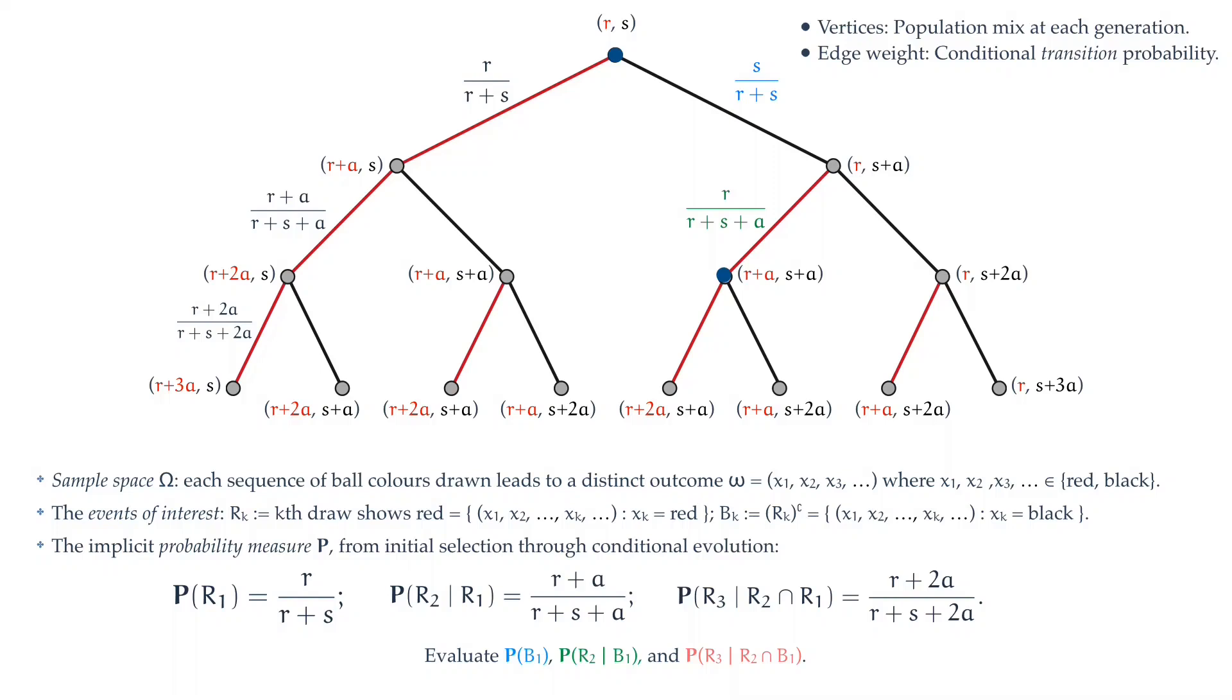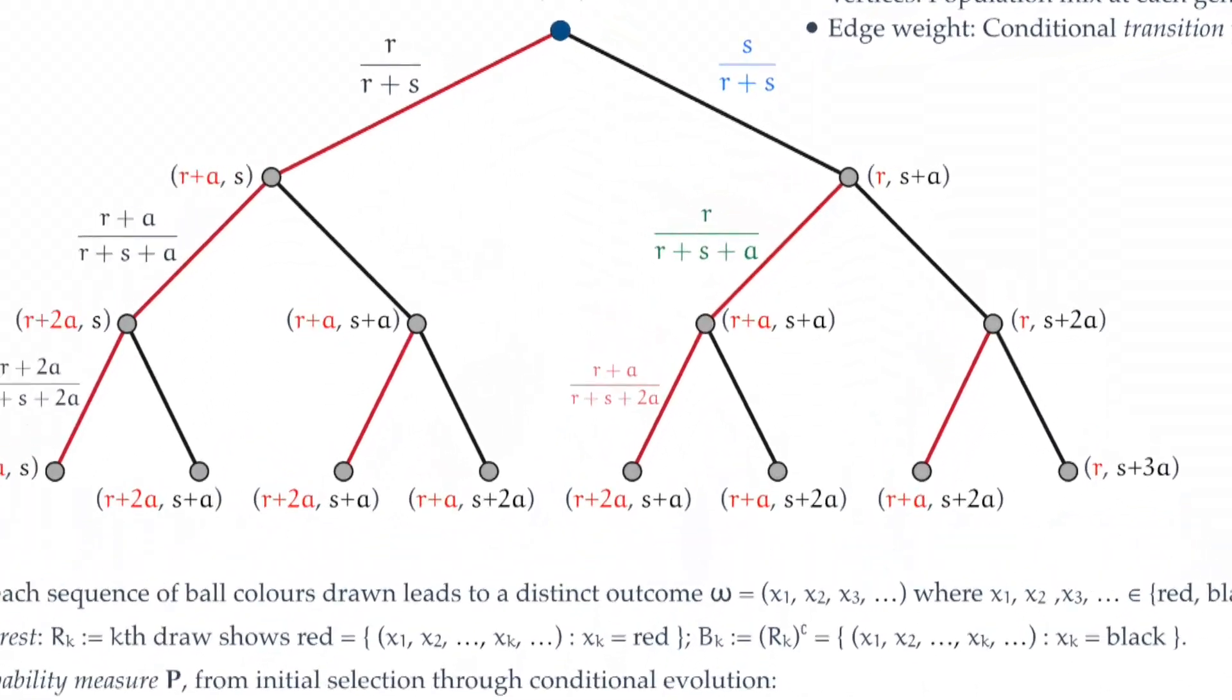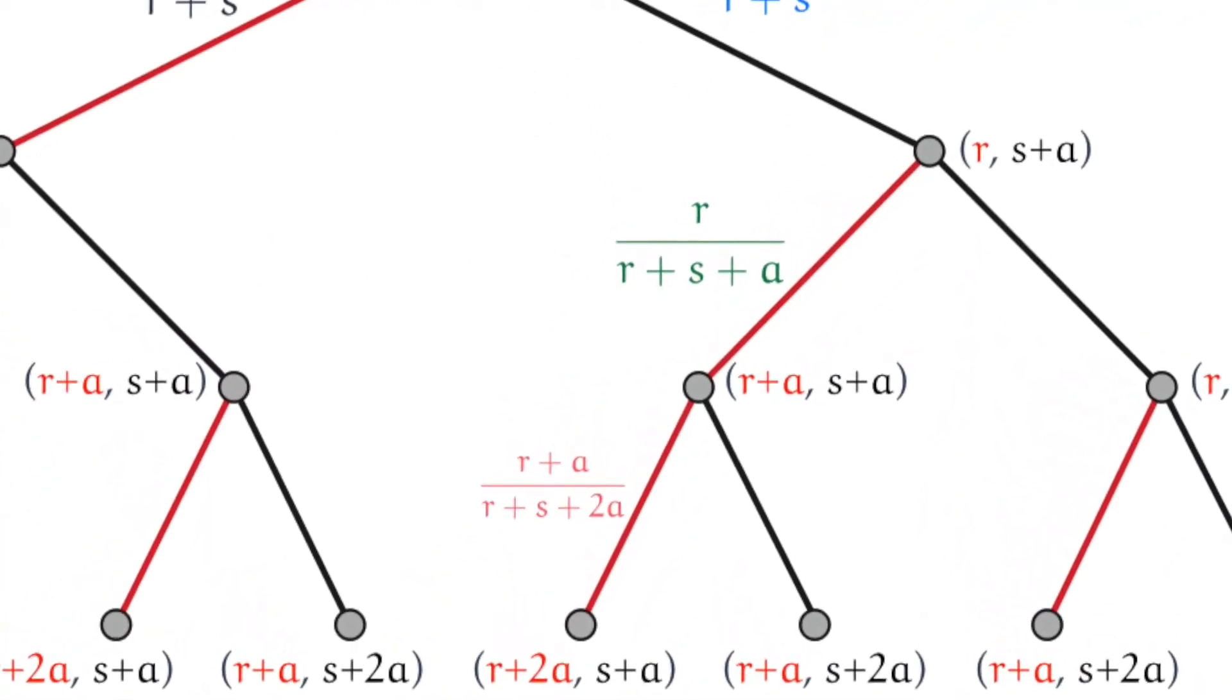Given that you had a black ball initially, followed by a red ball in the second draw, what is the chance of a red ball on the next draw? Well, the population mix now, given that you have drawn already a black ball and a red ball, is R plus a and s plus a. The chance of drawing a red ball now is R plus a divided by R plus s plus 2a. And now you see how easy this is. You can systematically populate all the edges here with forward transition conditional probabilities, as I've shown here.